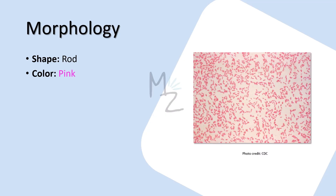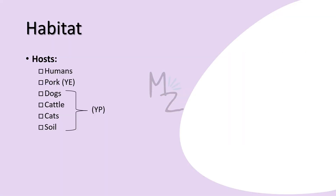Morphology: both Yersinia enterocolitica and Yersinia pseudotuberculosis are rod-shaped. They are pink colored because they are gram-negative. In this picture you can see Yersinia enterocolitica, which is rod-shaped and pink colored.